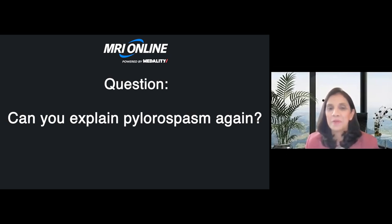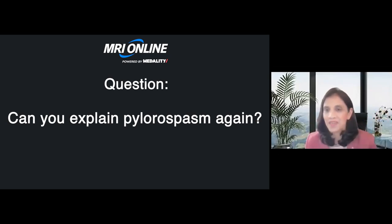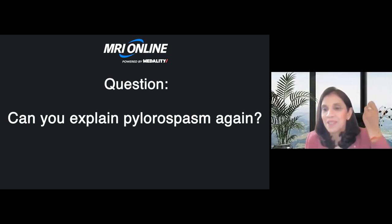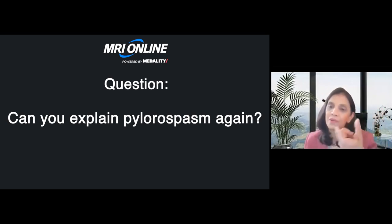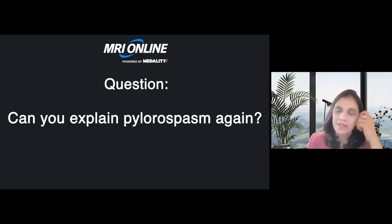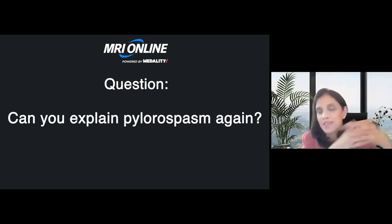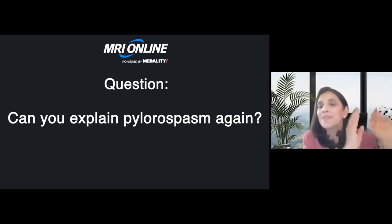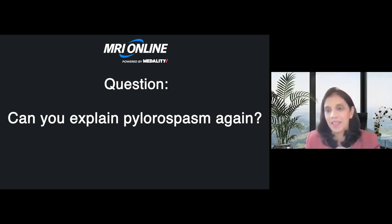Explain pylorospasm. Pylorospasm is like a transient spasm — similar to a uterine contraction. You just wait and re-evaluate; you'll see a different reading of the length of the pyloric canal each time. The reading keeps changing, indicating it's probably just a temporary spasm coming and going. You must always exclude this before giving a diagnosis of hypertrophic pyloric stenosis.